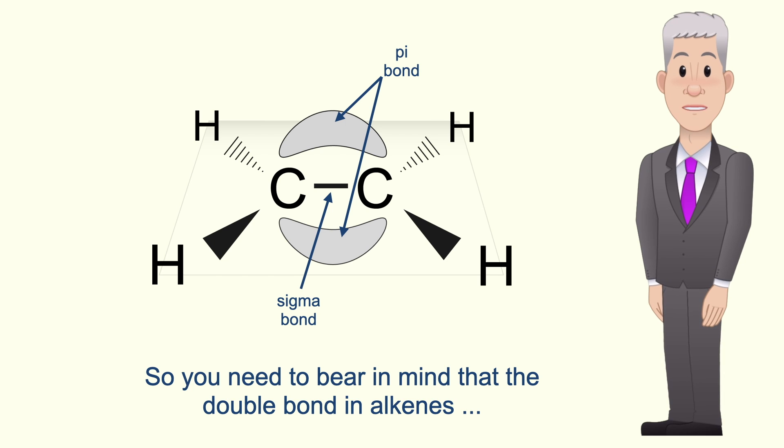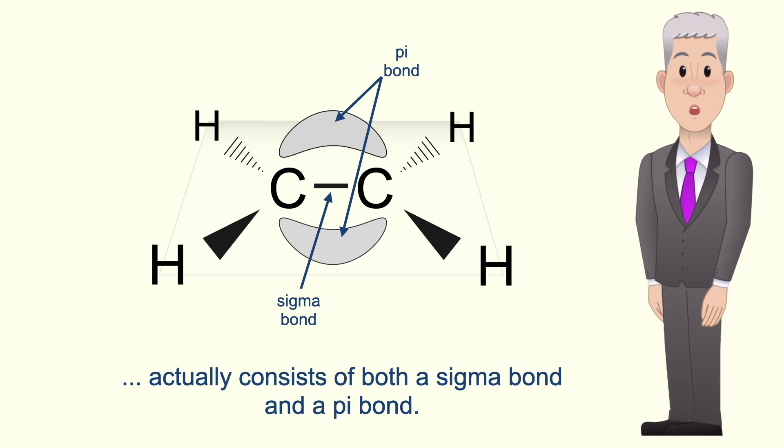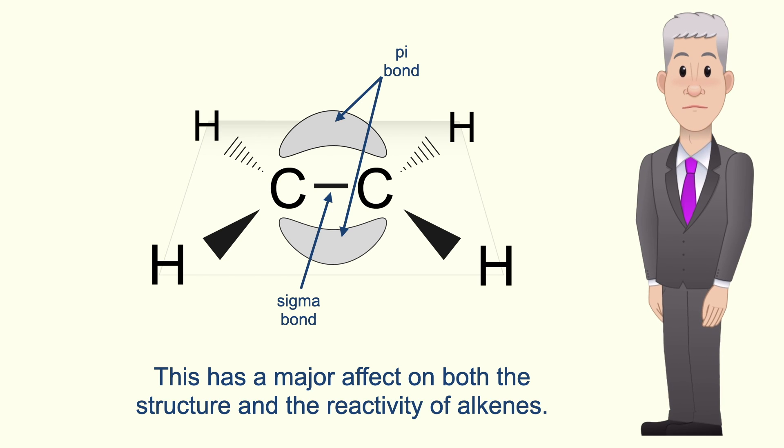Okay so you need to bear in mind that the double bond in alkenes actually consists of both a sigma bond and a pi bond and this has a major effect on both the structure and the reactivity of alkenes.